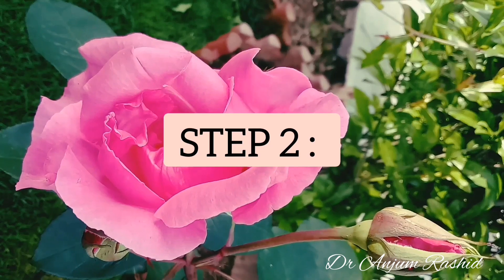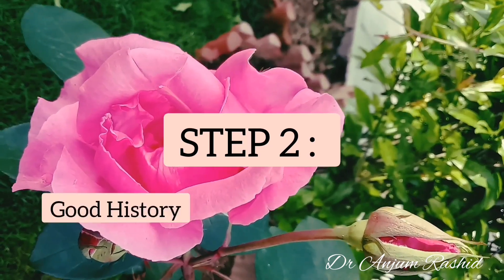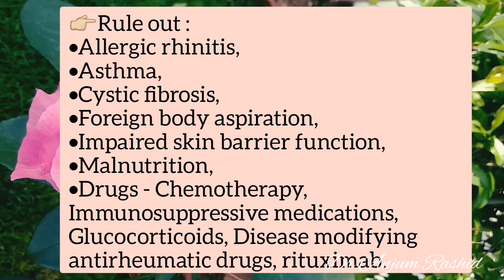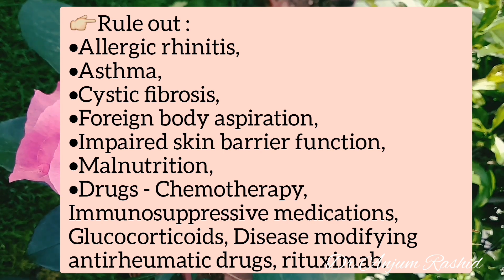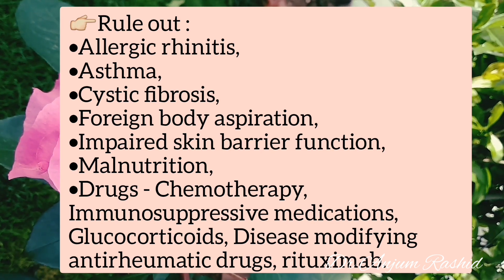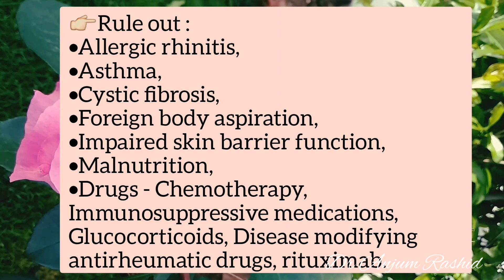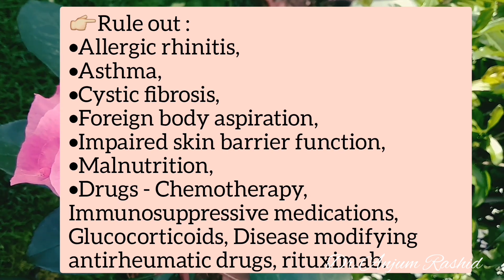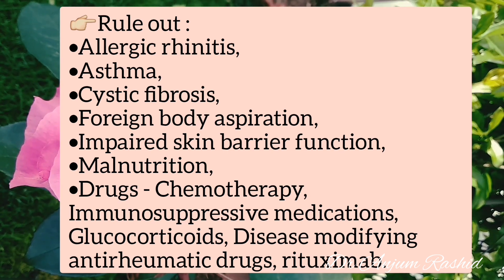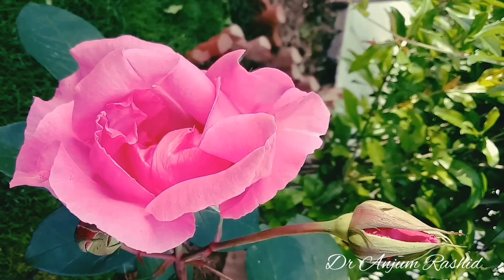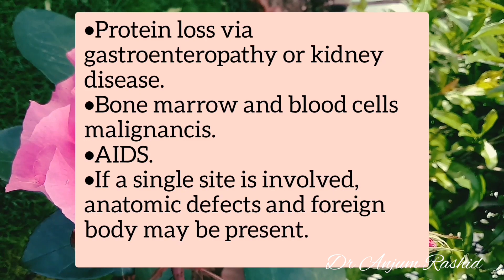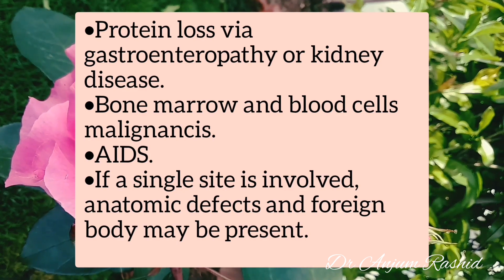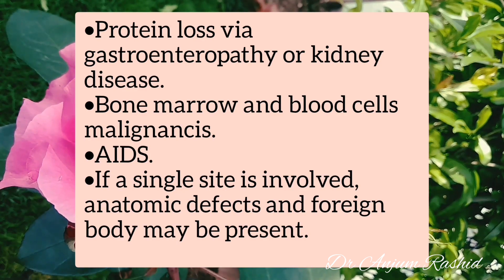The second step is to rule out other conditions that increase susceptibility to infection, which can be achieved through good history-taking and complete physical examination. Rule out allergic rhinitis, asthma, cystic fibrosis, foreign body aspiration, conditions impairing skin barrier function, malnutrition, and drugs such as chemotherapy, immunosuppressive medications, glucocorticoids, and disease-modifying anti-rheumatic drugs such as rituximab. Also rule out protein loss via gastroenteropathy or kidney disease, bone marrow and blood cell malignancy, AIDS, and if a single site is involved, anatomic defects and foreign body.